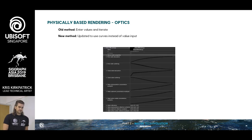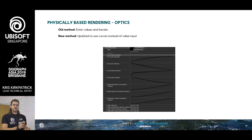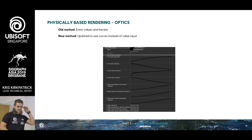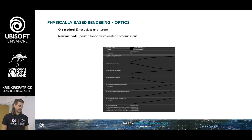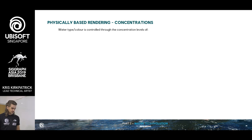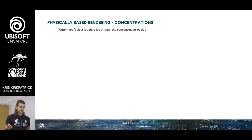But there is a problem — it's not the greatest workflow. It's prone to human error; you're manually entering color values that you're either taking away or adding, which can be quite confusing. So with the new method, we now have a curve, so you can get a mathematically correct progression on your scattering, absorption, and reflectance falloff. Now we've got our base water set up — we know exactly what the light's doing, what's being absorbed, which colors are being scattered, which ones are being reflected.